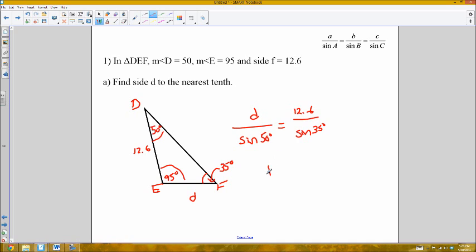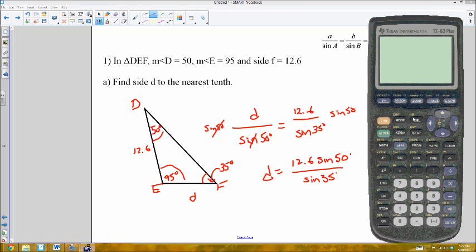Okay. I'm going to solve for D. So, D is equal to, by multiplying both sides by sine of 50. I don't know what that value is, but I know it definitely has a value. That will cancel over here, leaving me with D. And I'll have 12.6 times the sine of 50, divided by the sine of 35 degrees. Okay. So, now we'll need to put that into the calculator.